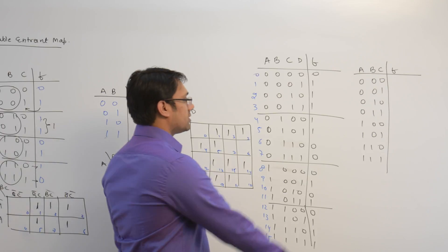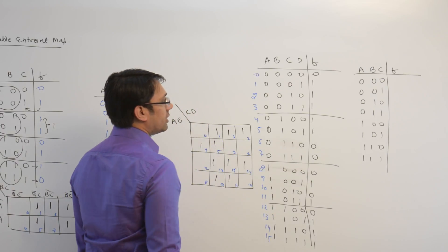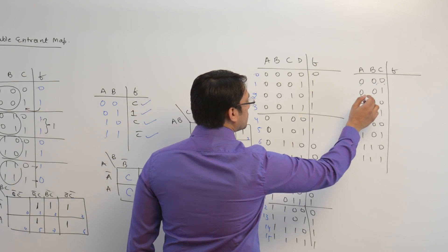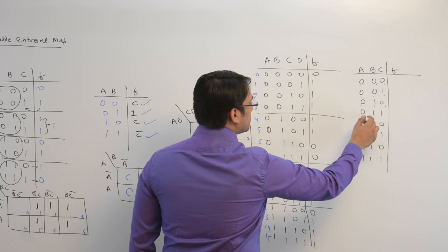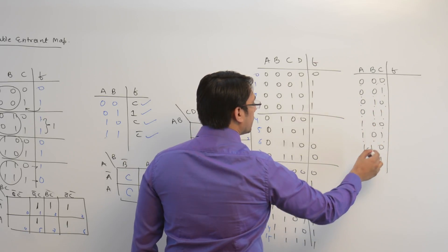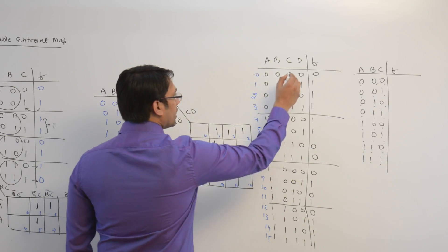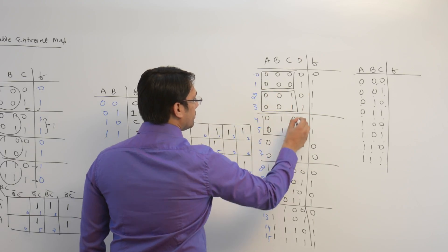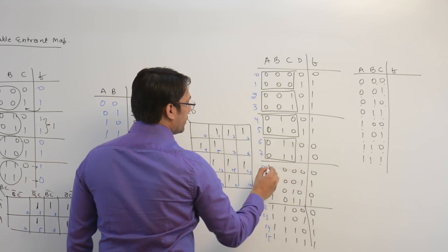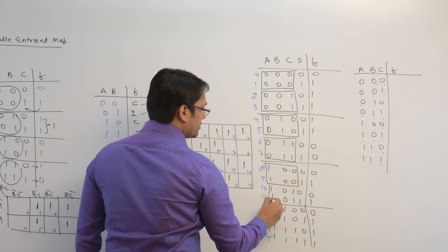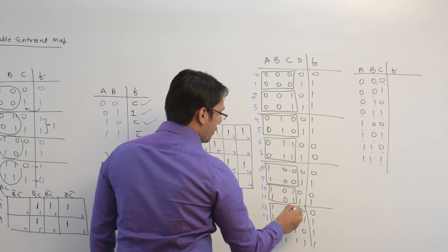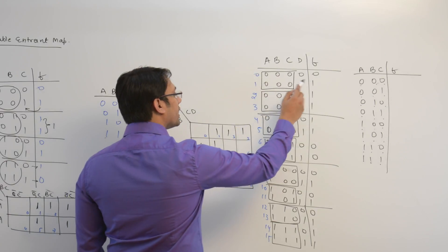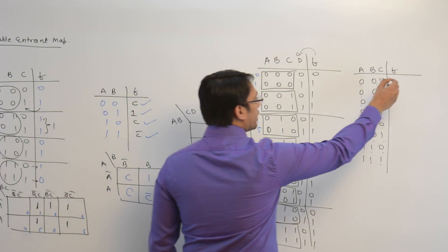From this we can build a variable entrant table for variables A, B, and C, observing how F behaves with respect to D. The combinations of A, B, and C range from 0-0-0 through 1-1-1. When the combination is 0-0-0, the function F behaves exactly like D, so we write D.